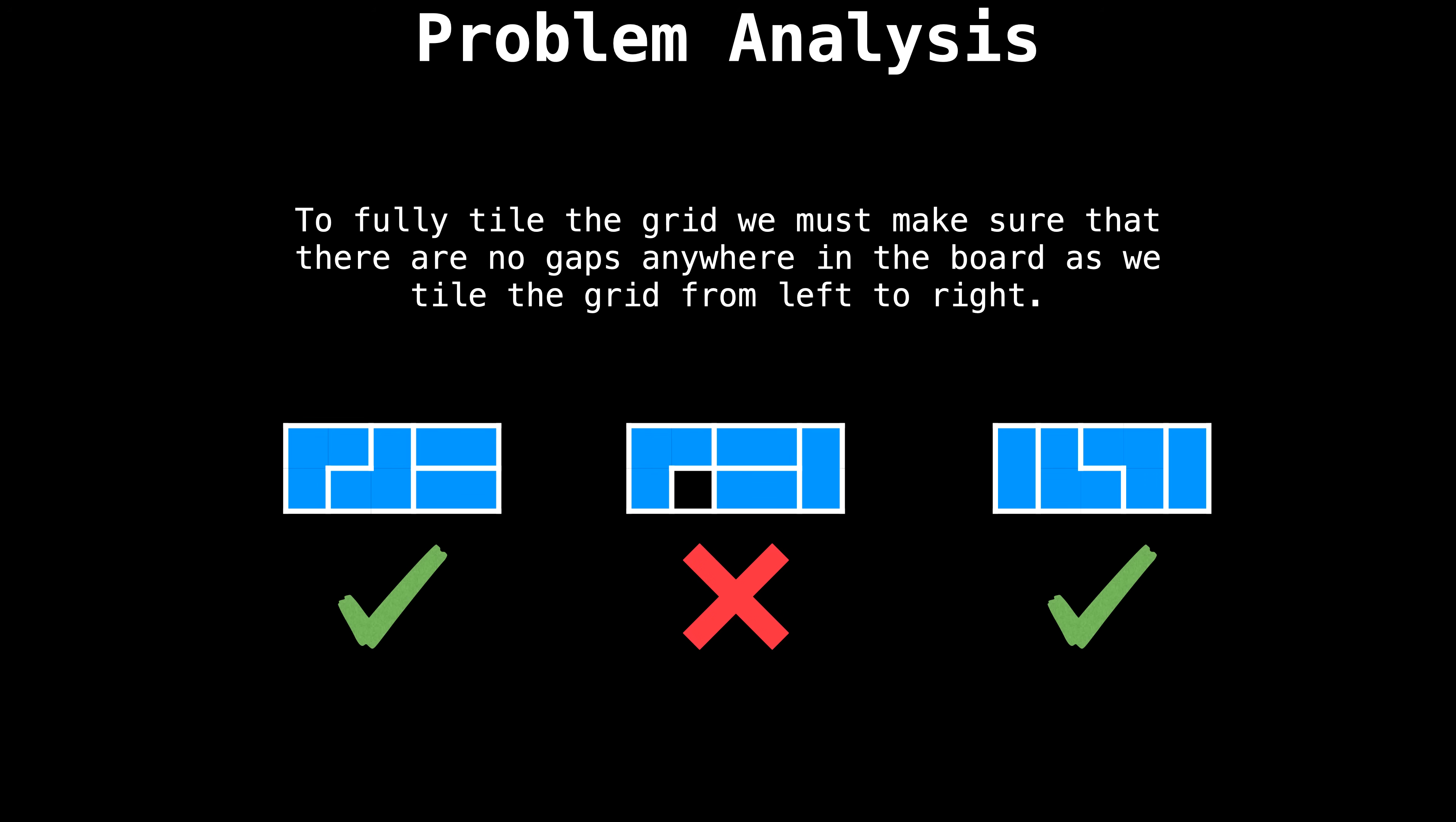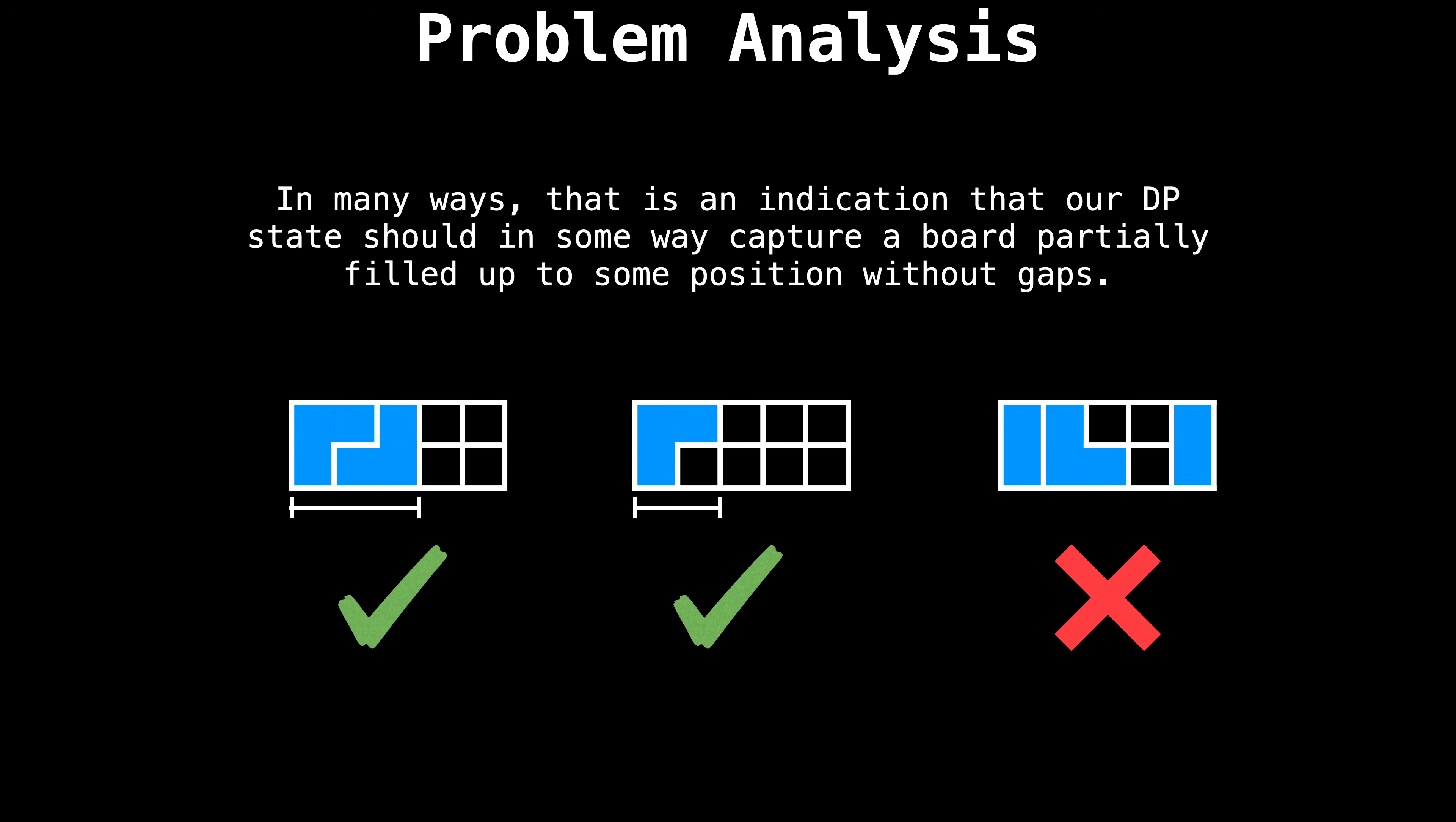The first observation to make about this tiling problem is that to fully tile the board, we must make sure that there are no gaps anywhere on the board. As we tile the grid from left to right, the first and the last boards on this slide are fully tiled, but we missed a spot in the middle grid, which we never want to do. In many ways, the necessity to have a fully tiled grid is an indication that our DP state should in some way capture a board partially filled up to some position without any gaps. The two boards with the green arrows show boards which are completely filled with tiles from left to right up to a certain position. This is what we want to track. Notice that the last board on the right is tiled out of order. We don't want to do that. Tiling from left to right is generally the way to go.